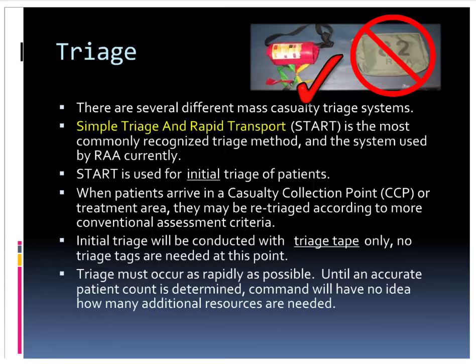The reason we want to work quickly and accurately is that an accurate patient count is going to be the key to managing an MCI — figuring out what specific resources we're going to need, how many hospitals we'll need to transport patients to, and what other resources we need on scene. The quicker we can do it, the faster we can perform massive hemorrhage control, identify critical patients, and get them into treatment areas to receive more definitive care.